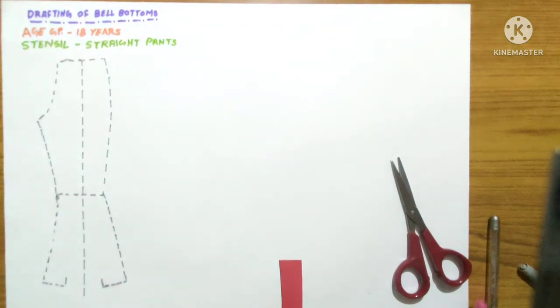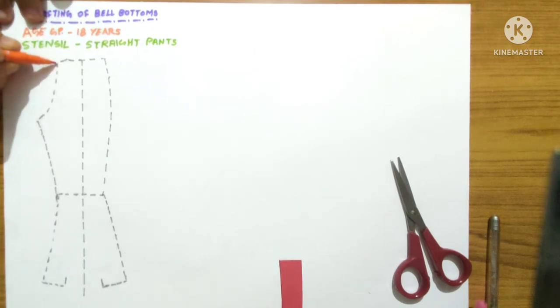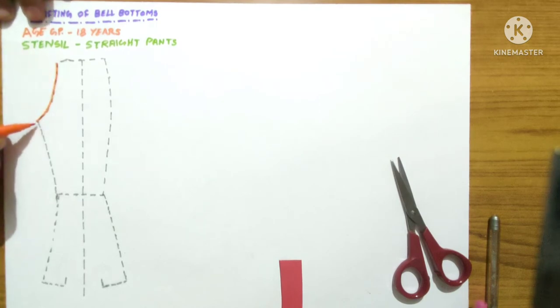And now what we will do, we will finally trace the outer line to give the final shape to the garment. We will do this with a different color so that you will be able to know what would be the final shape. I am going to start, this is the crotch. Just you have to trace on the lines.